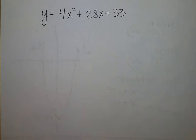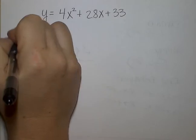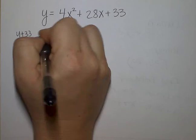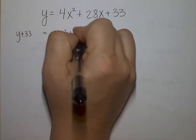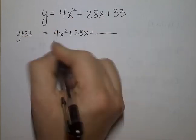Vertex form, so I'm going to move 33 to the opposite side. Then I'm going to factor out a 4.